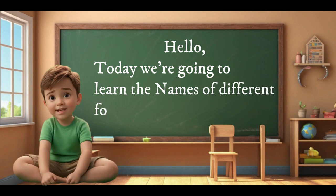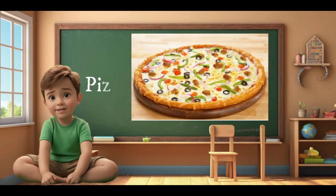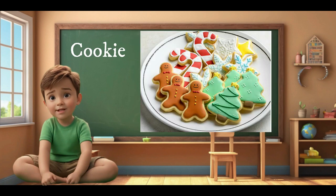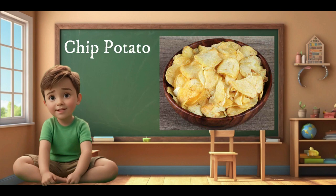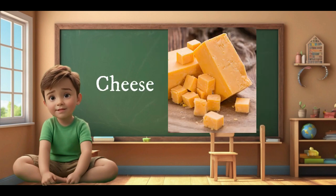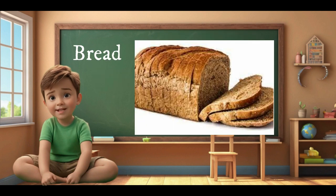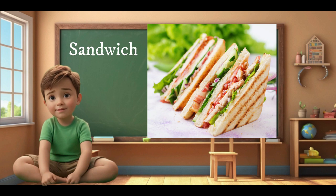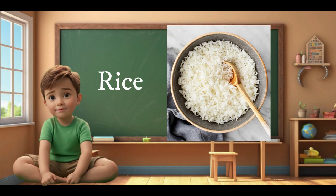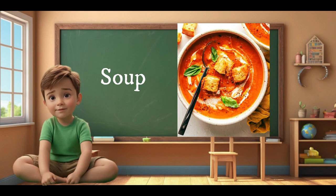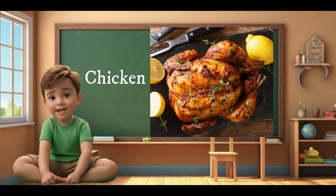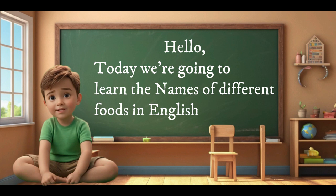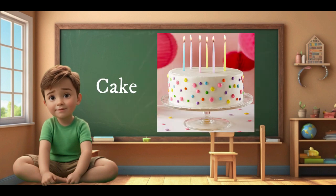Like and subscribe. Hello, today we're going to learn the names of different foods in English. Pizza. Cake. Candy. Cookie. Chocolate. Chip potato. Cheese. Yogurt. Bread. Salad. Hamburger. Sandwich. Pasta. Rice. Soup. Pasta.